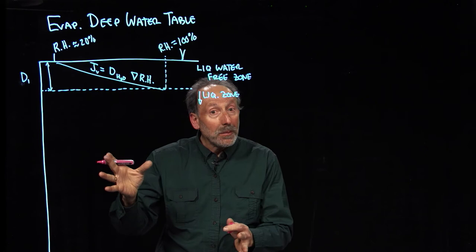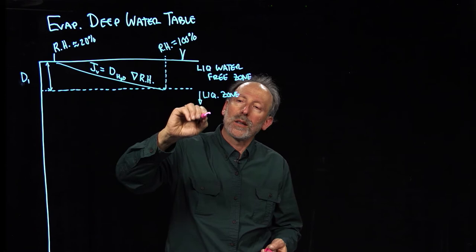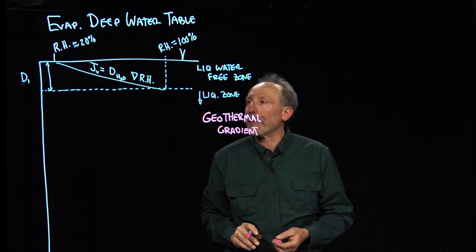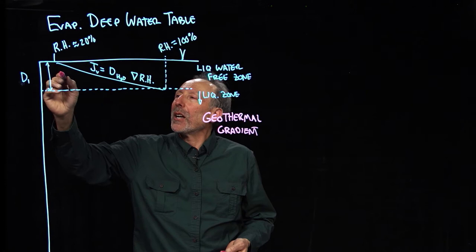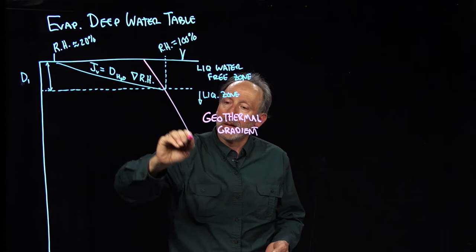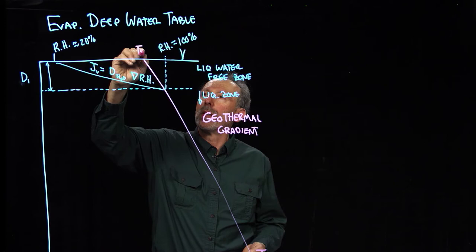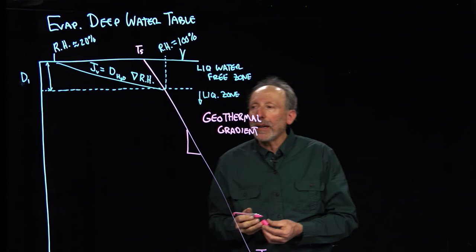One of the things that we have in deep unsaturated zones is a temperature gradient. And we call that the geothermal gradient. And that's a gradient in temperature. So typically the earth is warm in the middle and cooler on top. So we're going to go ahead and draw a gradient in temperature here. So we have a T at the water table and we have a T at the surface. And there's a gradient.